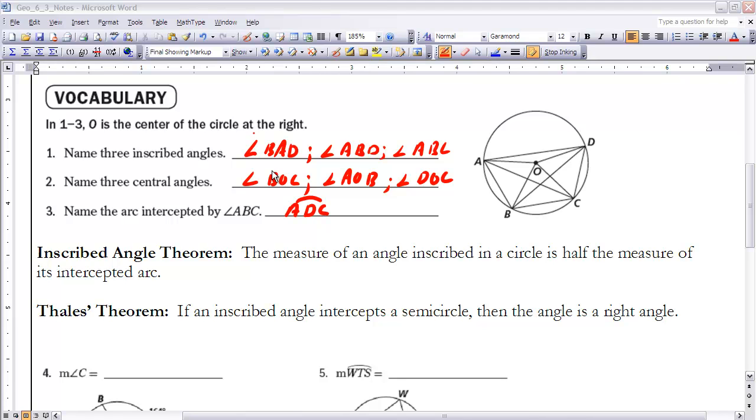As I look at number one, name three inscribed angles. I've named three of them here. Those are certainly not the only three. There's a lot of inscribed angles. What's key about inscribed angles is the vertex point has to be either A, B, C, or D - one of the points on the circle. You must name it with three points because every one of those vertex points has several angles in them. As long as you name it with three points and the three points are all on the circle, you should be fine with those inscribed angles.